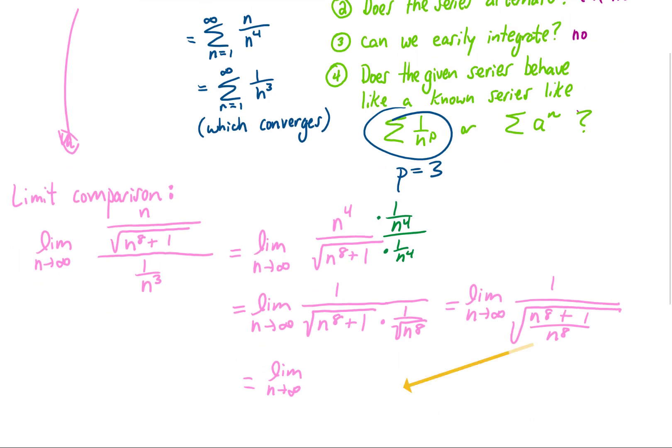And now we're finally in a position where if we plug in n equals infinity, we get that this limit is 1 over the square root of 1, which is just 1.